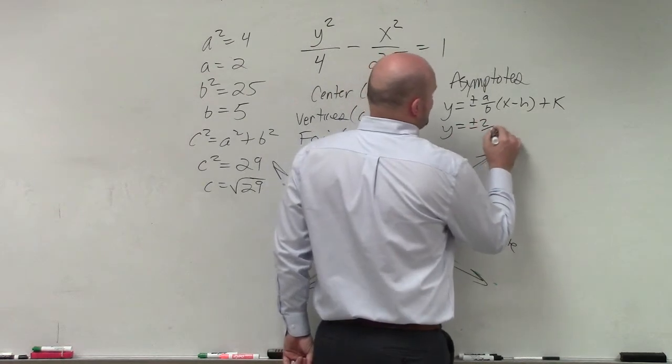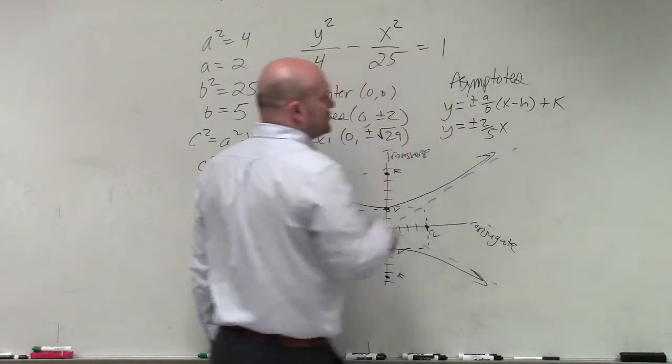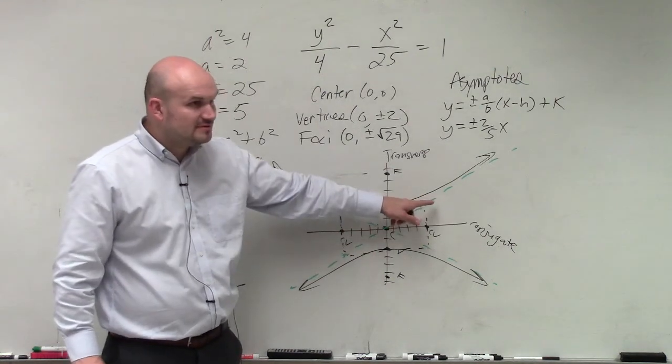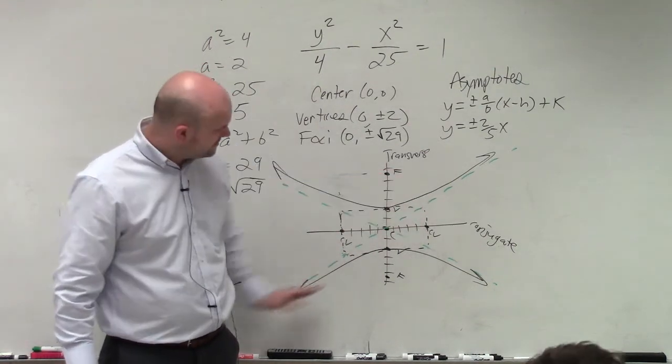y equals plus or minus 2 fifths x. And then 0, 0, right? And does that look about right, guys? Up 2 over 5? Yeah, right? And there's your, there's the line. OK. Ta-da.